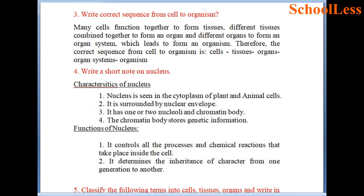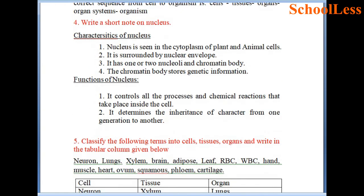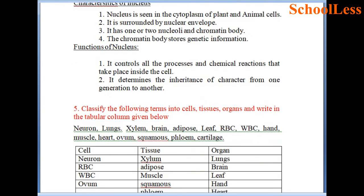Question 4: Write a short note on the characteristics of nucleus. Nucleus is seen in the cytoplasm of plant and animal cells. It is surrounded by a nuclear envelope. It has one or two nucleoli and chromatin body. The chromatin body stores the genetic information of an organism. Nucleus controls all processes and chemical reactions inside the cell and determines the inheritance of character from one generation to another.